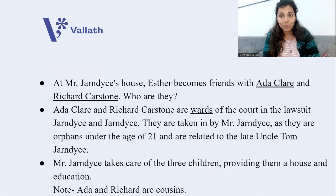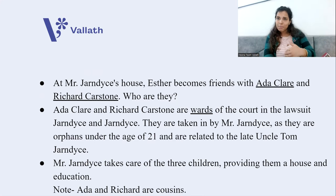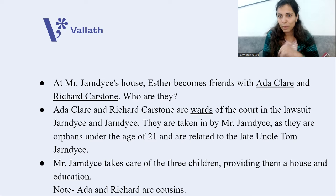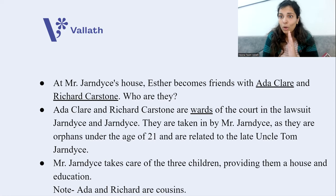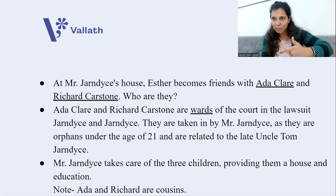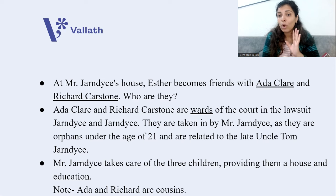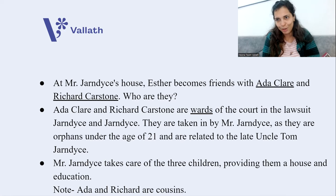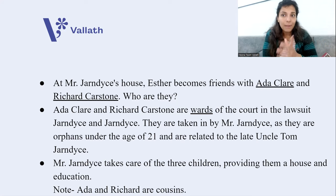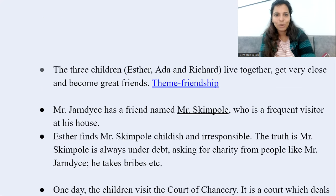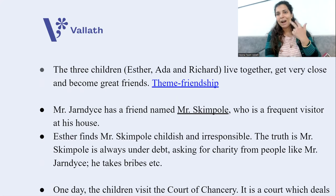Ada Clare and Richard Carstone are wards of the court in the lawsuit Jarndyce and Jarndyce. They are orphans under the age of 21, related to the late Uncle Tom Jarndyce, and the court has ordered Mr. Jarndyce to take care of them until they become adults. Ada and Richard are cousins, and both are also related to Mr. Jarndyce. Mr. Jarndyce provides the three children — Esther, Ada, and Richard — a house and education.